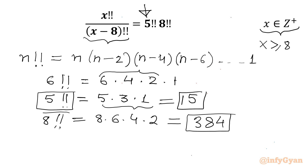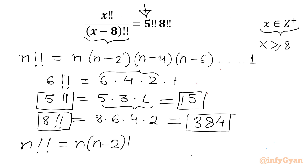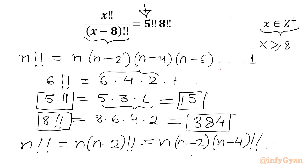So our right-hand side is 15 times 384. Now for the LHS I will use the recursive formula. The double factorial recursive formula is: n double factorial equals n times n minus 2 double factorial, or n times n minus 2 times n minus 4 double factorial, and so on.